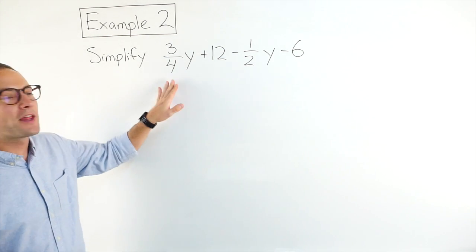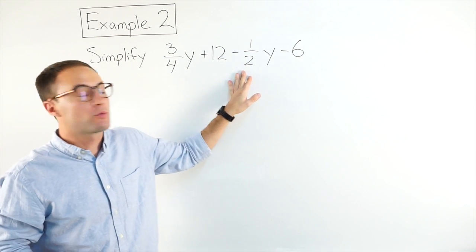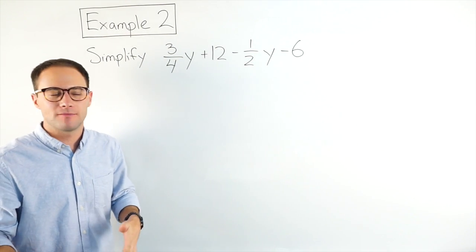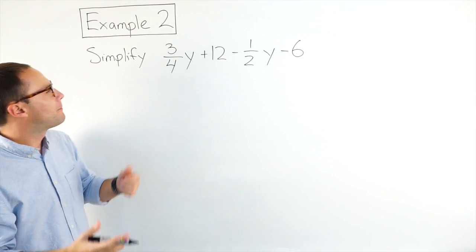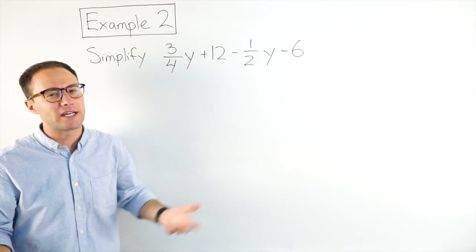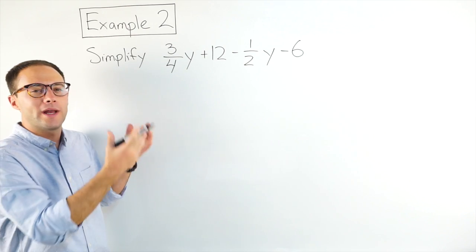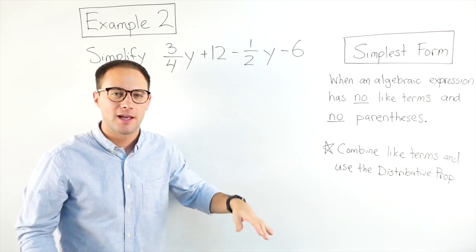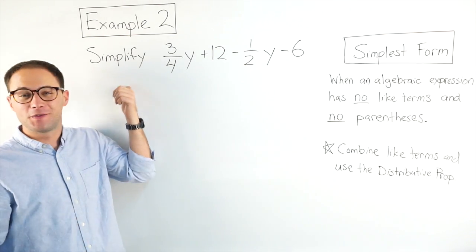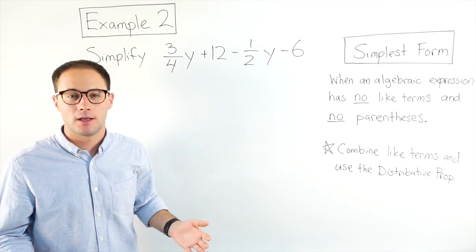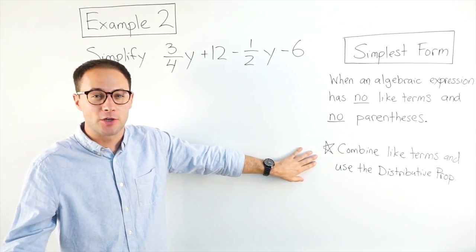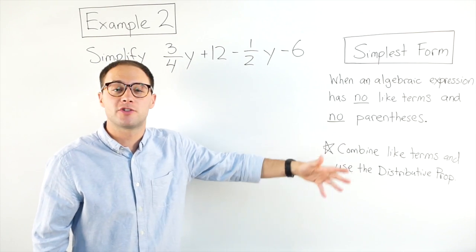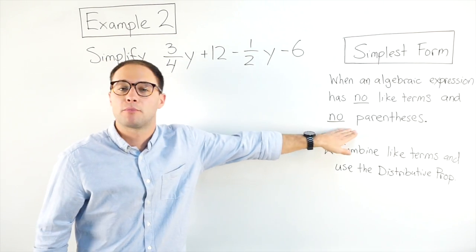Example two: simplify three-fourths y plus 12 minus one-half y minus 6. Now, simplifying algebraic expressions — how do I know when it's in simplest form? When there are no like terms and no parentheses. When you get to that point, it's in simplest form. To get there, we call it combining like terms. When you see like terms, you can combine them, and use the distributive property when you need to — that helps get rid of parentheses.